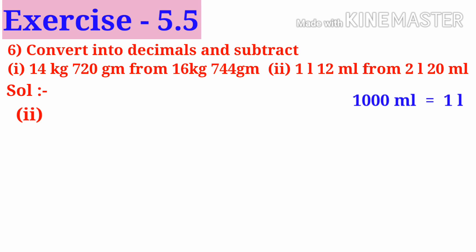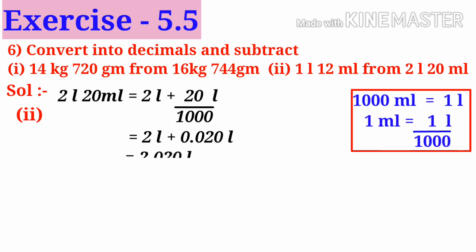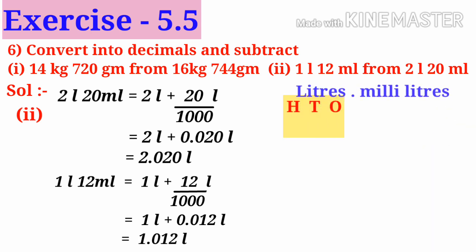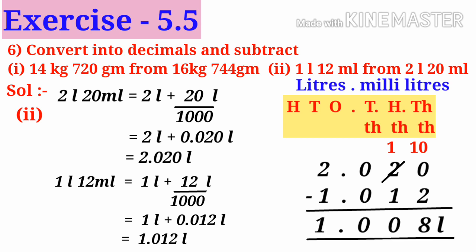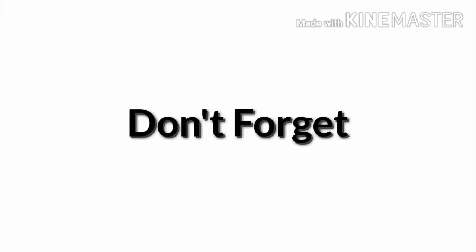Number 2: 1000 milliliters makes 1 liter, so 1 milliliter is 1/1000th of a liter. 2 liters 20 ml equals 2 + 0.020 = 2.020 liters. 1 liter 12 ml equals 1 + 0.012 = 1.012 liters. Subtract: 2.020 minus 1.012. 10 minus 2 is 8, 1 minus 1 is 0, 0 minus 0 is 0, 2 minus 1 is 1. So 1.008 liters. Thanks for watching. Don't forget to subscribe.